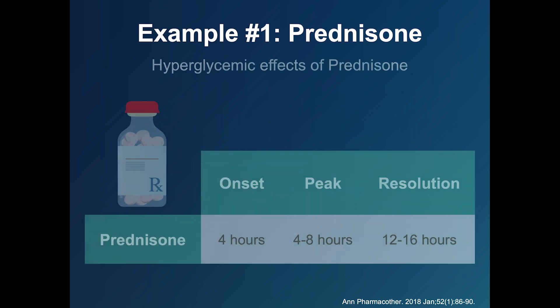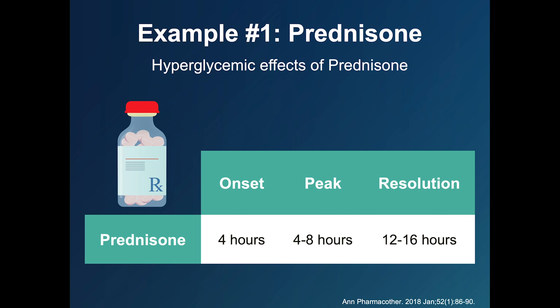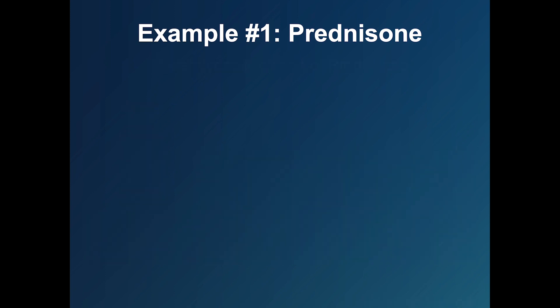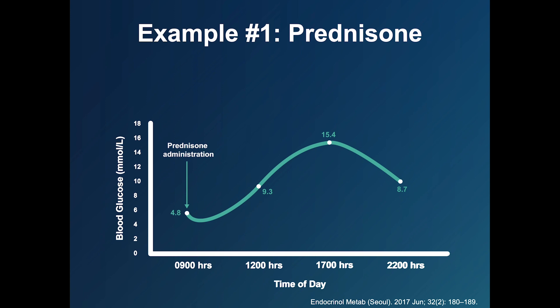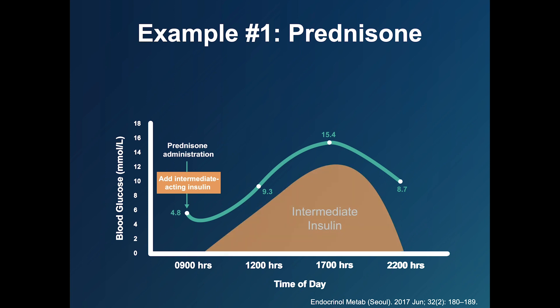Example 1: Prednisone. Prednisone is a very commonly prescribed intermediate-acting glucocorticoid. It starts to raise blood sugars approximately 4 hours after administration, peaks at around 8 hours, but the effects can linger for up to 16 hours. A morning dose of prednisone will typically lead to hyperglycemia in the afternoon and early evening, with blood sugars falling to normal overnight. Based on clinical experience, intermediate-acting insulin (NPH insulin) appears to be a good match for once-daily prednisone, as its blood sugar-lowering effects peak around 8 hours later and last up to 15 hours.